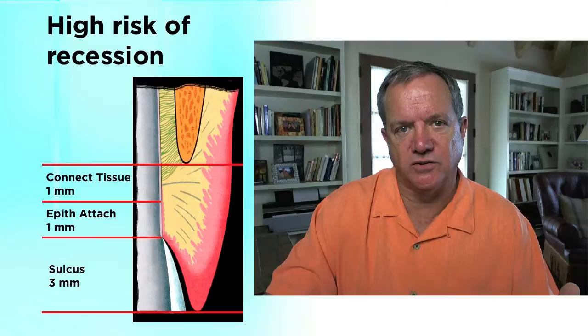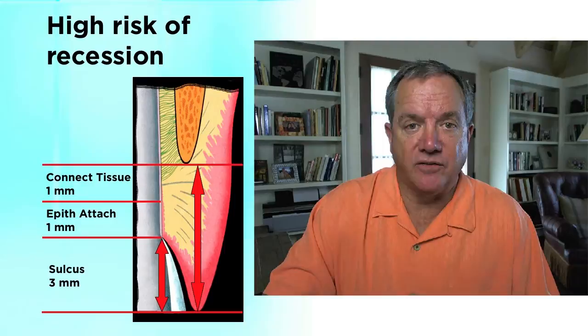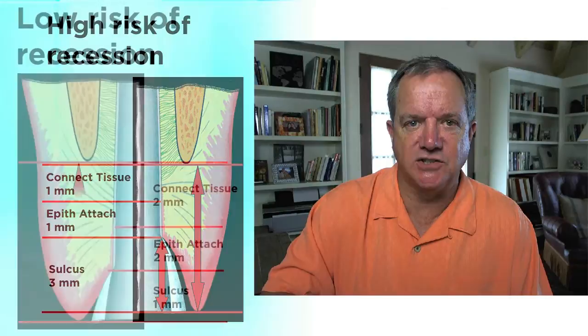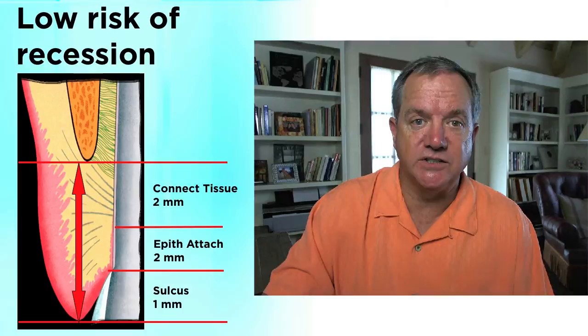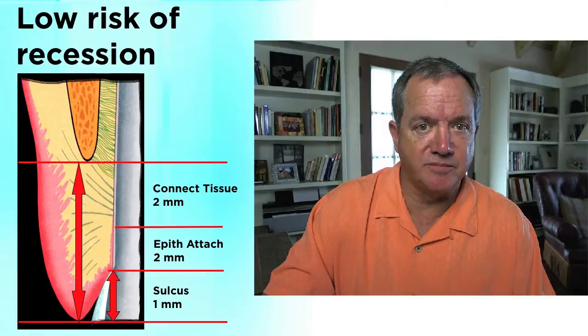There are some patients that are at higher risk of recession than others. A person who has five millimeters of tissue above bone but a three millimeter deep sulcus is at risk of recession. That won't recede to the bone — it'll recede and stop perhaps at a one or two millimeter sulcus. But the deeper the sulcus and the thinner the tissue, the harder it is to maintain tissue height. Patients at lower risk of recession — even if they might have more tissue above bone — with only a millimeter sulcus are much less likely to get recession than a patient with a three millimeter sulcus.